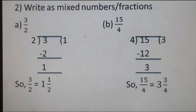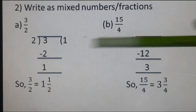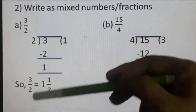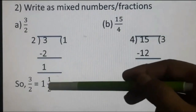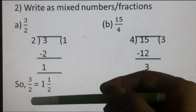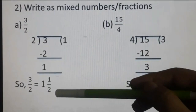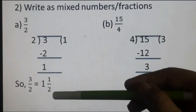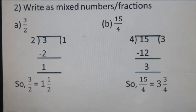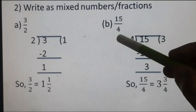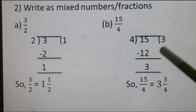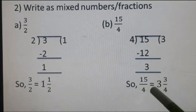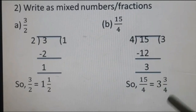Question 2: write as mixed numbers or mixed fractions. The formula is Q whole R upon D (quotient whole remainder upon divisor). Part A: 3 upon 2 — 2 ones are 2, remainder 1 — so 3 upon 2 = 1 whole 1 upon 2. Part D: 15 upon 4 — 4 threes are 12, remainder 3 — so 15 upon 4 = 3 whole 3 upon 4.